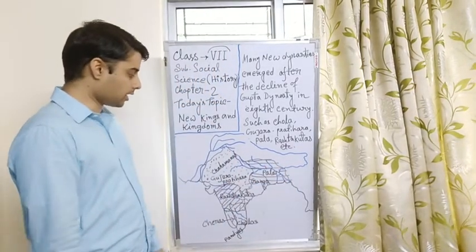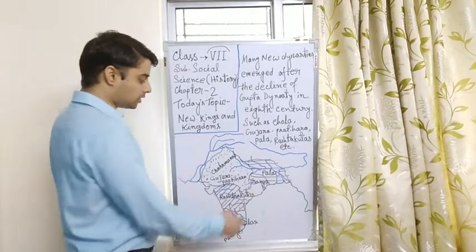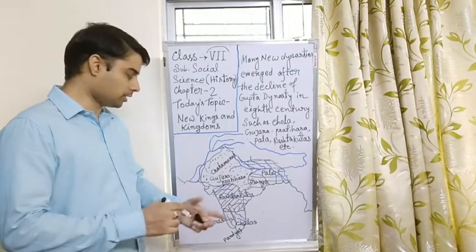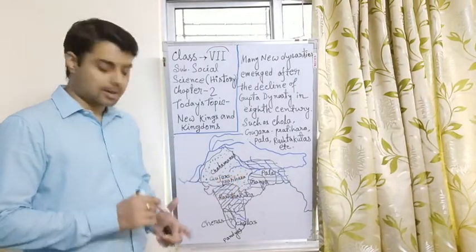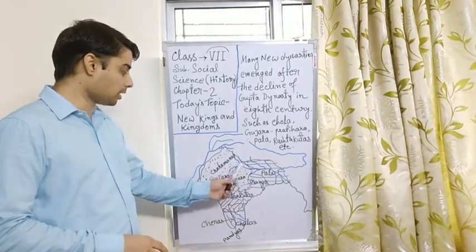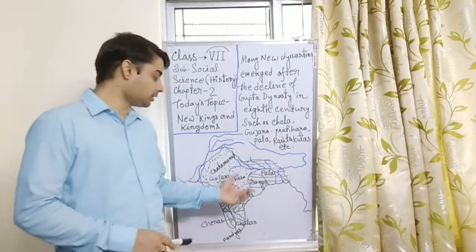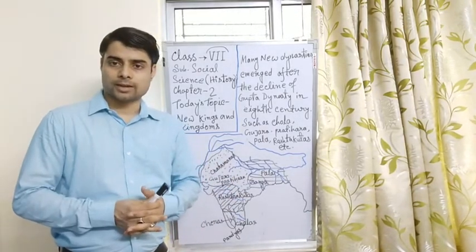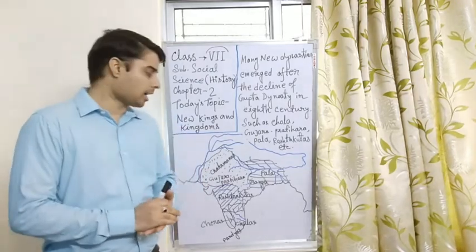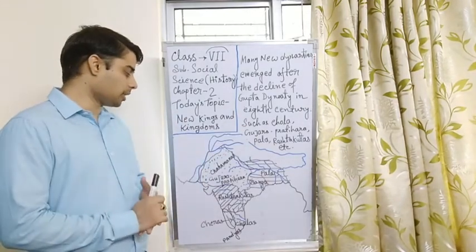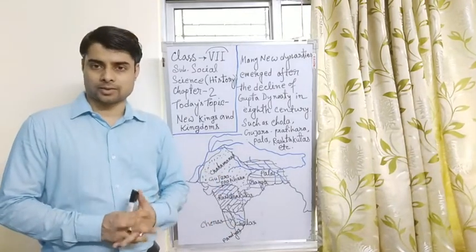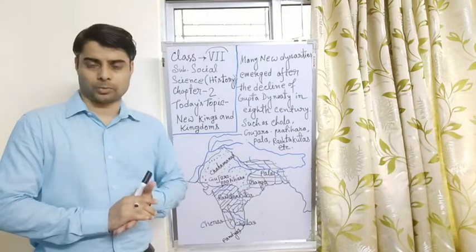There are other dynasties also like Ganga dynasty in Odisha, and also Chandels in Central India and Tomara in Northern India. So these are some dynasties that spread their kingdom after the decline of Gupta empire. So in this way different different dynasties spread their dominion over different parts of India.